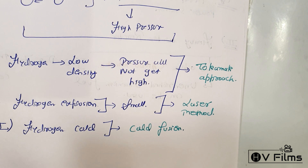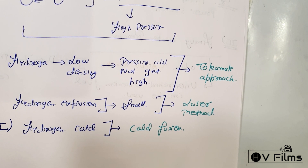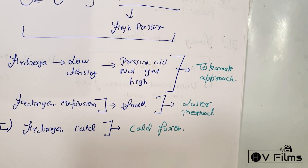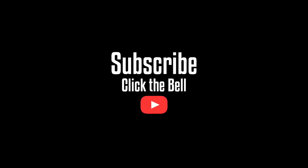These are the three main approaches to achieving fusion. In the next chapter, we will discuss how ITER plays a critical role, what the tokamak approach is, and what cold fusion is.